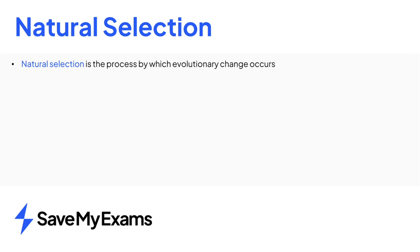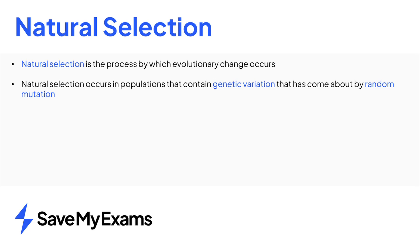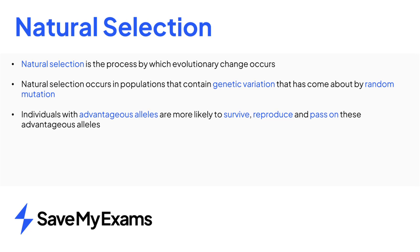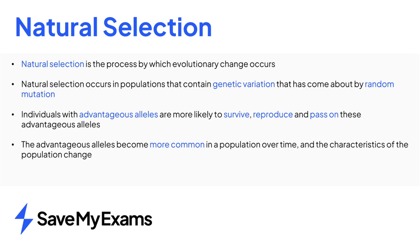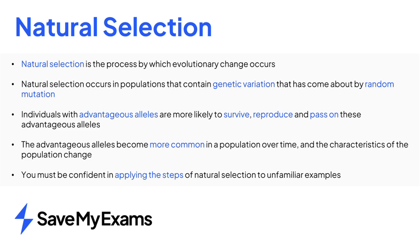In summary, natural selection is the process by which evolutionary change can take place. In order for natural selection to occur, a population must contain genetic variation that results from random mutation. Individuals with advantageous alleles are more likely to survive, reproduce and pass on these alleles. The advantageous alleles become more common over time and the characteristics of the population change. Exam questions will usually ask you to apply your understanding of natural selection to unfamiliar examples, so you must learn the steps involved.